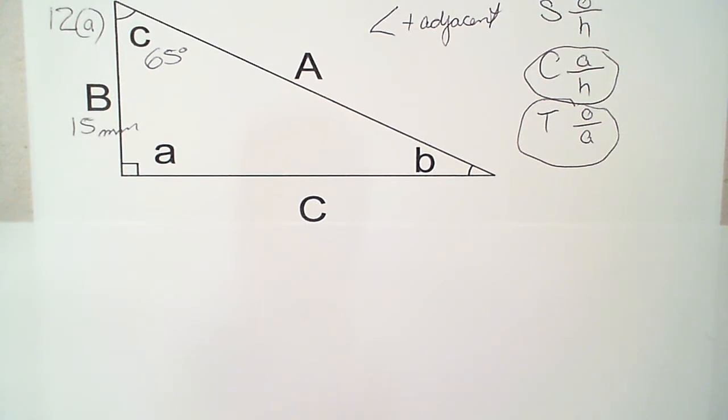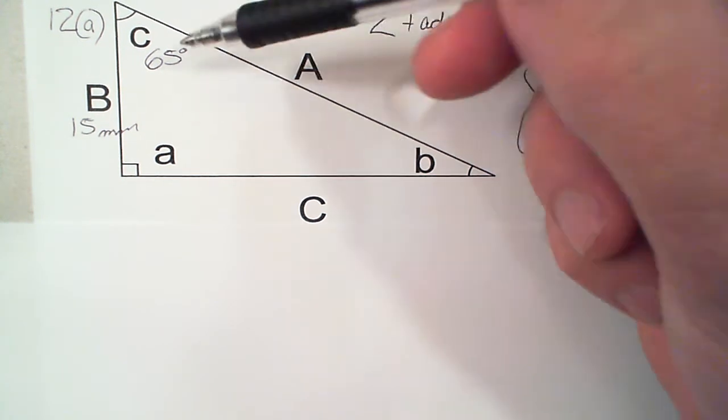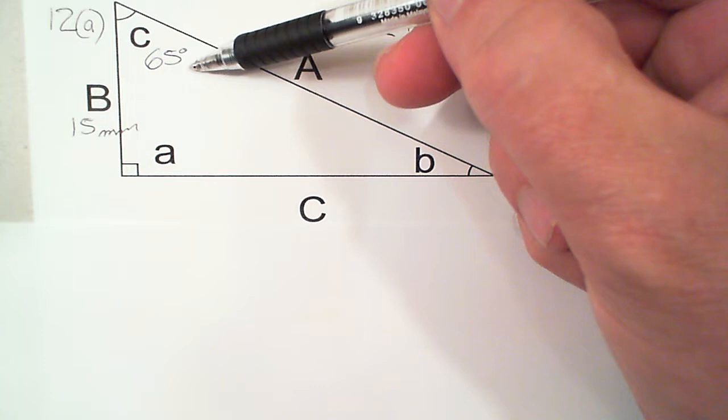Line C. How are we going to find Line C? We know that Line C is opposite Angle C.